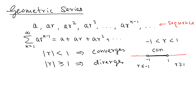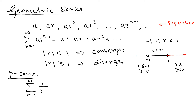Now let's look at the p-series. The p-series is written as the sum from n=1 to infinity of 1 over n^p. For the p-series, when p is greater than 1, the series converges, and when p is less than or equal to 1, the series diverges.